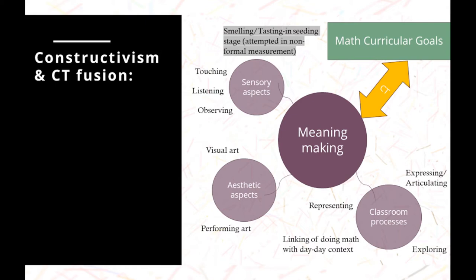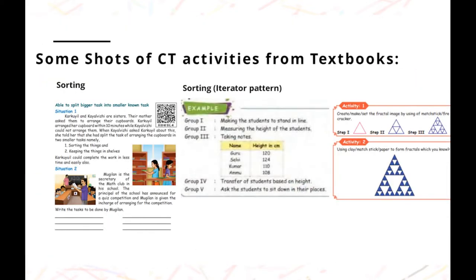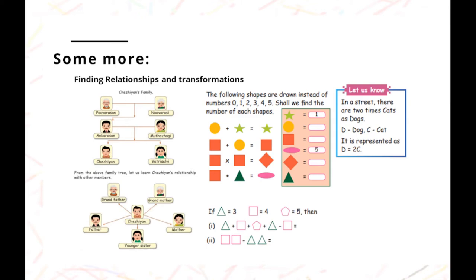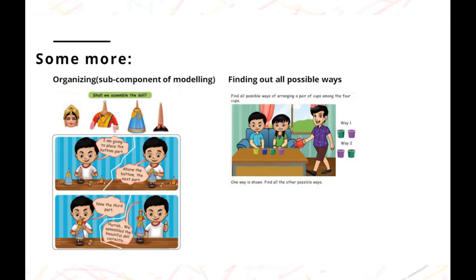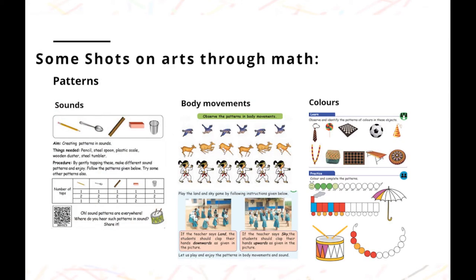Having set the context by understanding the nature of children, the question that arises is: how do we link it with the math curricular goals? We have infused computational thinking through a lot of activities to help children think about their thinking. Some examples of CT activities from the textbook include: seriating, sequencing, sorting, iterating patterns, finding relationships, doing transformations, organizing, finding all possible ways to solve, selecting relevant by eliminating irrelevant, setting rules, and recognizing and creating patterns of sound, body movements, color, shape, and combinations of those.